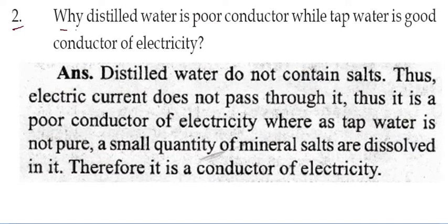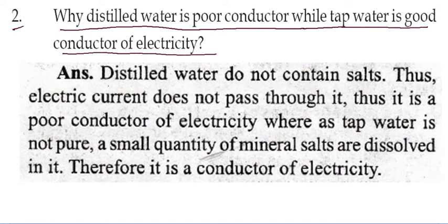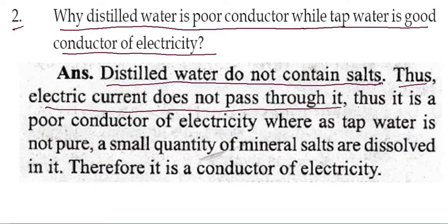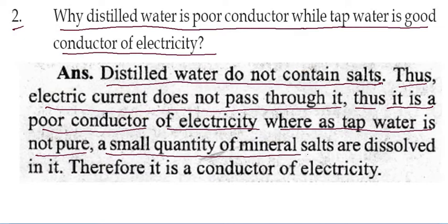The second question: why is distilled water a poor conductor while tap water is a good conductor of electricity? Distilled water does not contain salts, so there is no charge and electric current does not pass through it. Thus it is a poor conductor of electricity. Whereas tap water is not pure — a small quantity of mineral salts are dissolved in it, therefore it is a good conductor of electricity.